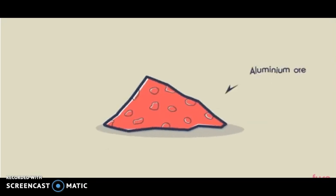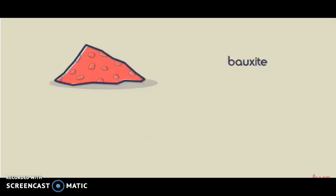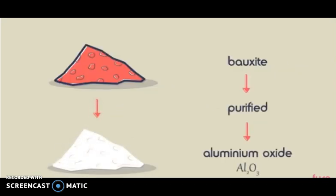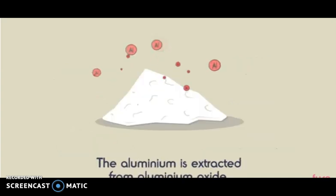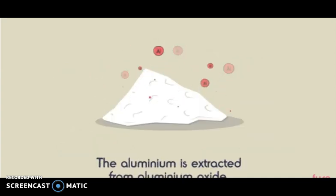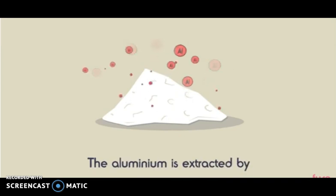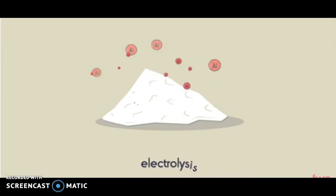The aluminium ore is called bauxite. Bauxite is purified to yield aluminium oxide, which is a white powder. Aluminium is then extracted from the aluminium oxide by electrolysis.